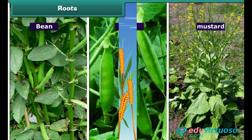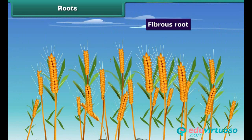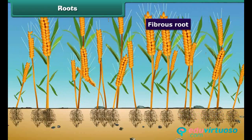In a fibrous root, a number of almost equal-sized roots are attached to the end of the stem — that is, there is no main root like a tap root. This kind of root is present in grass and wheat.